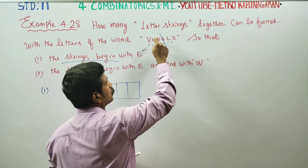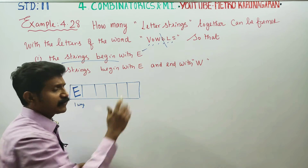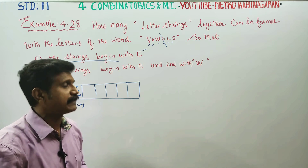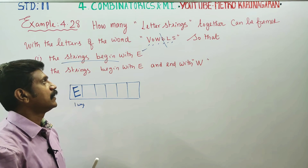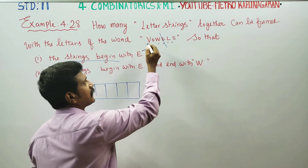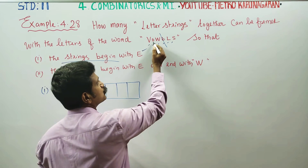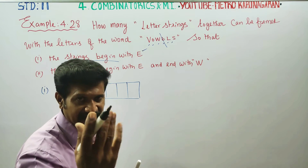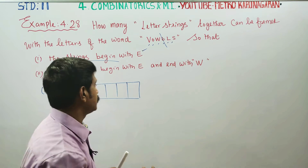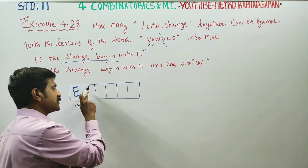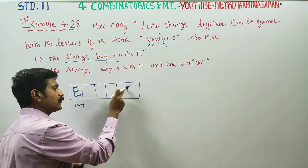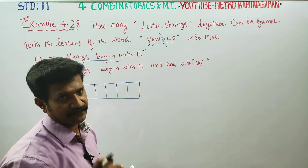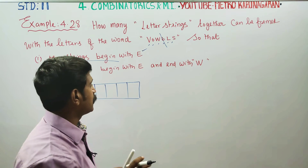The remaining free letters are V, O, W, L, S — five letters available. There are five remaining vacancies: positions 1, 2, 3, 4, 5.